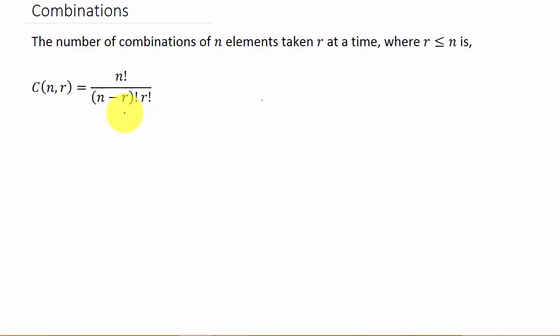Basically, the difference between a combination and a permutation—and I'll have another video on this where I go into more detail—but basically for a permutation, the order that you choose the items makes a difference. For a combination, the order that you choose the items does not make a difference. That's the difference between combination and permutation.